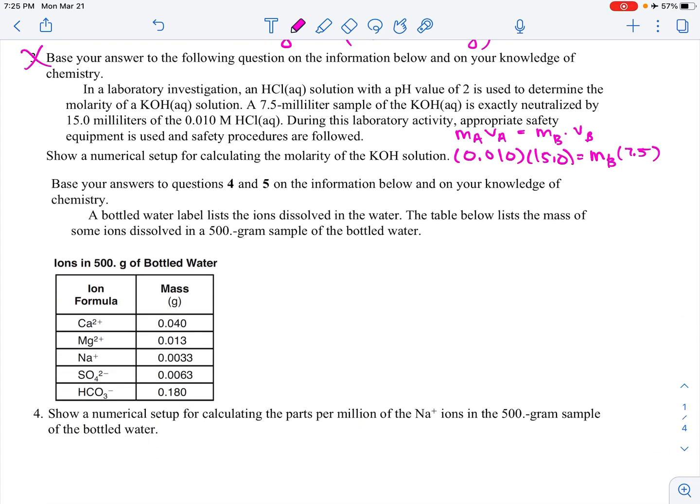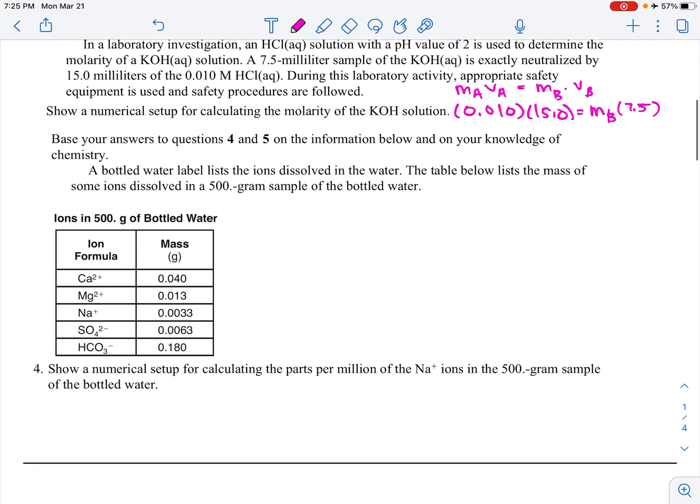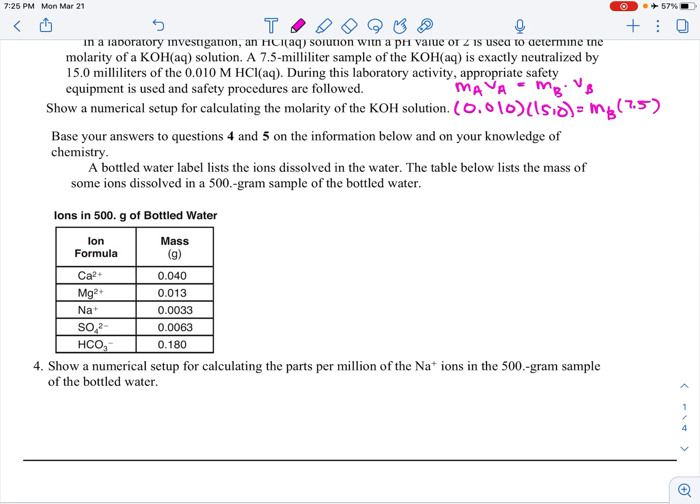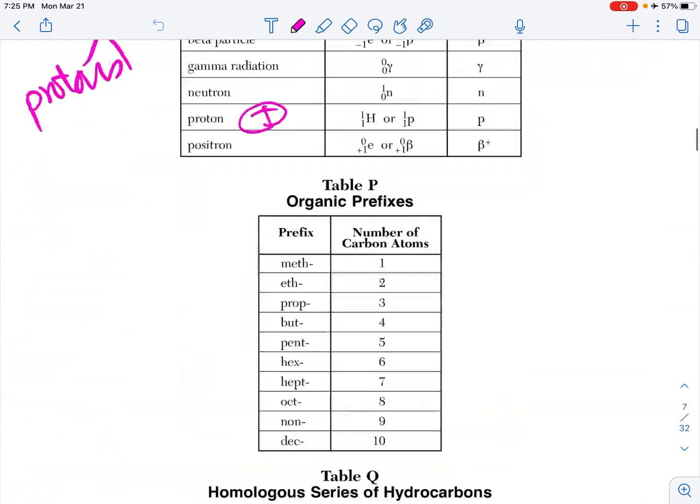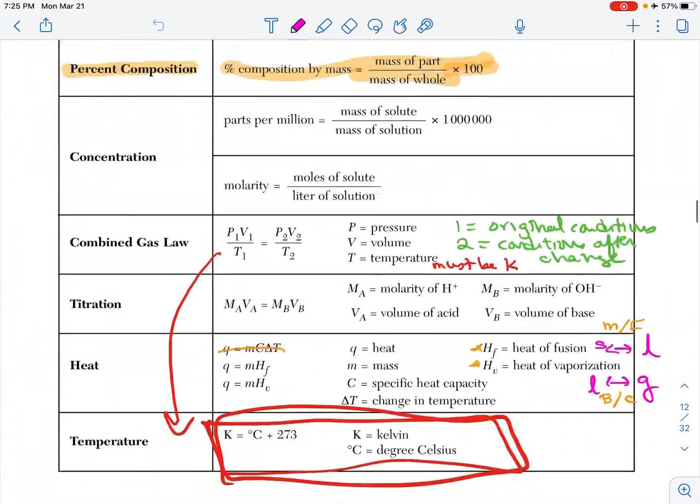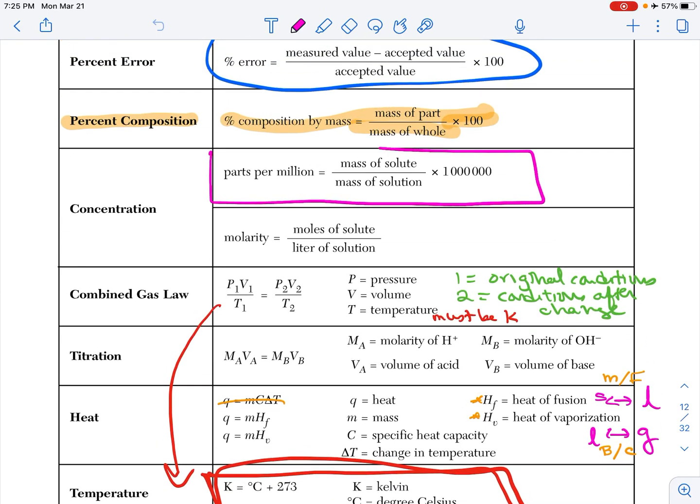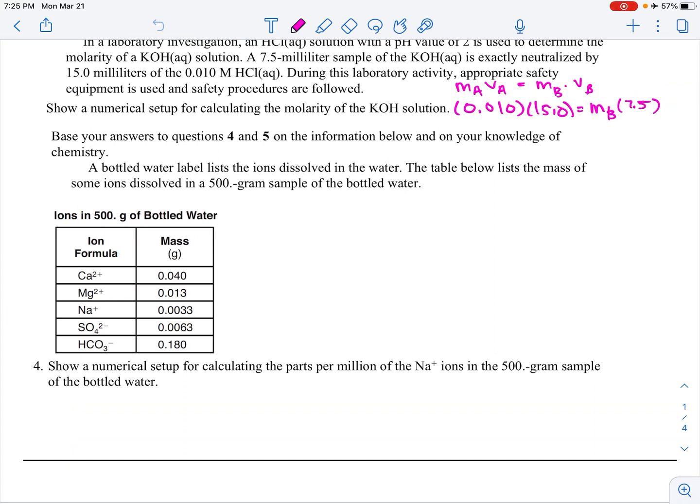Okay, a bottled water label lists the ions dissolved in the water. The table below lists the mass of some ions dissolved in the 500 gram sample. So we've got ions and mass. It says, show a numerical setup for calculating the parts per million of the Na+ ions in the 500 gram sample of a bottle of water. So if we go back here, table T, parts per million is here, which is mass of solute over the mass of the total solution times a million. So Na+ the mass of the solute is this. The mass of the total solution would be 500 gram sample plus the solute times 1 million. There you go. And you don't have to solve it.